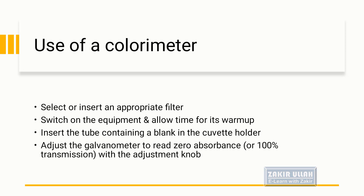After that, insert the tube containing a blank into the cuvette holder. Adjust the colorimeter so that it gives zero absorbance or 100% transmission with the help of the adjustment knobs on the colorimeter.